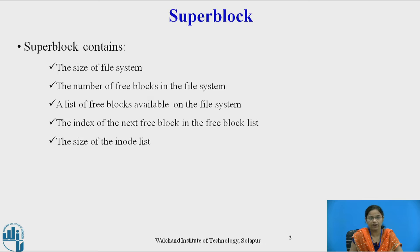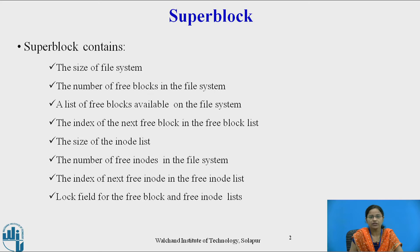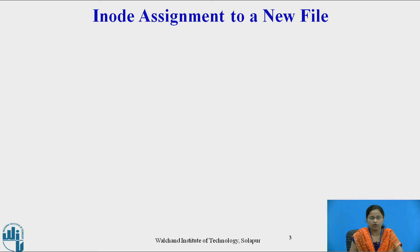The super block also contains the size of the iNode list, the number of free iNodes in the file system, the index of the next free iNode in the free iNode list, and a lock field for the free block and free iNode list. So that is what the super block contains — information about the file system, iNodes, and the number of free blocks present.